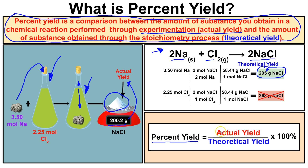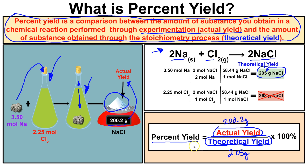Percent yield compares what you get in the lab — the actual yield — to what you should be getting by running the stoichiometry — the theoretical yield. To calculate percent yield for this example: actual yield is 200.2 grams, theoretical yield is 205 grams, so we take 200.2 divided by 205 times 100% to get our percent yield.